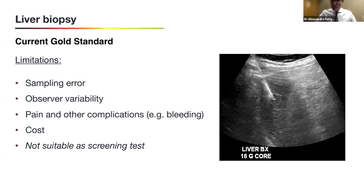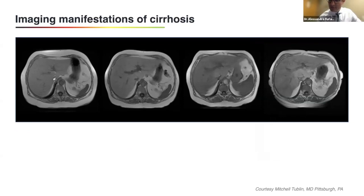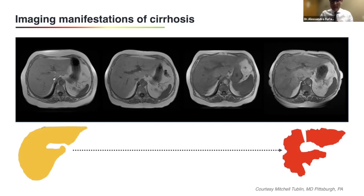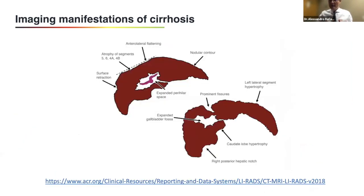That's why, as imagers, we play more and more an important role in detecting and quantifying fibrosis. We initially mostly rely on morphologic changes of the liver — as the amount of fibrosis increases, the morphology of the liver changes. The margins become nodular, and the distribution of volume changes as well. The right hepatic lobe tends to decrease in volume while the left and caudate lobe tend to increase in volume. Other signs we commonly see in patients with advanced liver disease include retraction of the surface in areas of heavy fibrosis deposit, expansion of the perihilar space, and expansion of the gallbladder fossa.